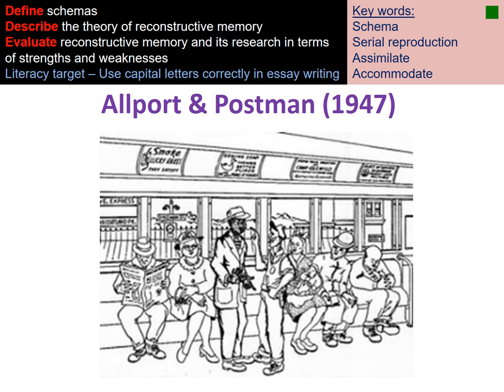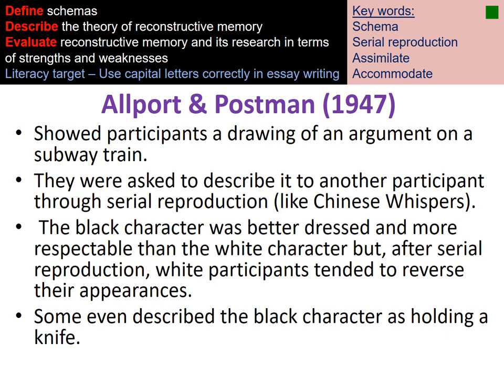Allport and Postman support Bartlett's theory. In a study from the 1940s, they showed participants a picture depicting a stereotype of the time — a Black character who was actually dressed better and more respectable than a White character on a train. However, after serial reproduction — asking participants to recall the picture multiple times — White participants reversed the appearances, saying the White person was dressed better. Because that reflected their schemas and expectations at the time, they changed their memory of the picture, supporting Bartlett's theory of reconstructive memory.